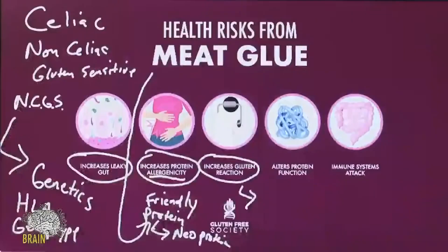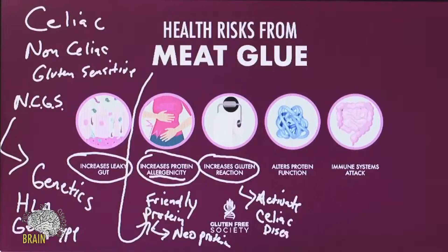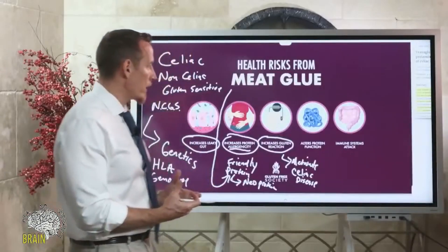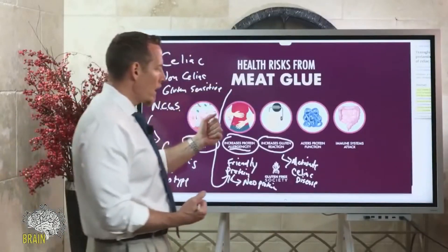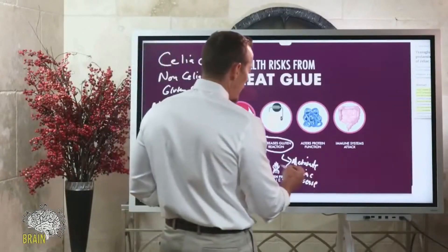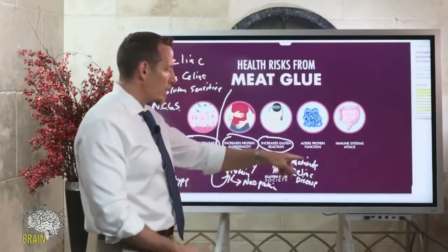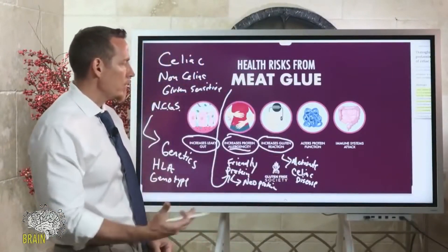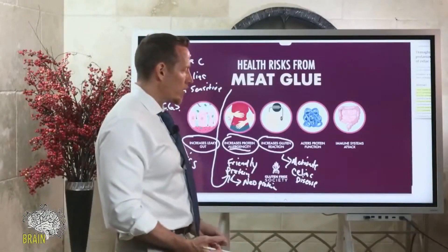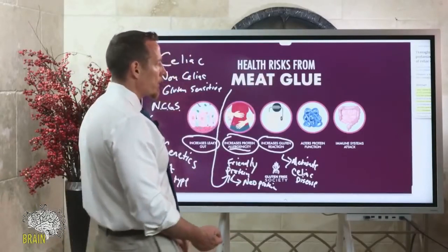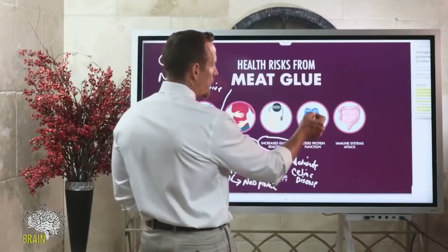Meat glue can actually exacerbate celiac disease and make it worse. That's why a lot of people who go on a gluten-free diet but buy processed products containing transglutaminase or meat glue continue to have persistent symptoms. The science backs this up — it activates, contributes to, or continues the perpetuation of a celiac-like response. We also know that meat glue can alter protein function.